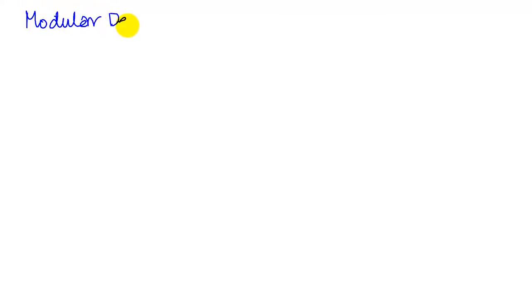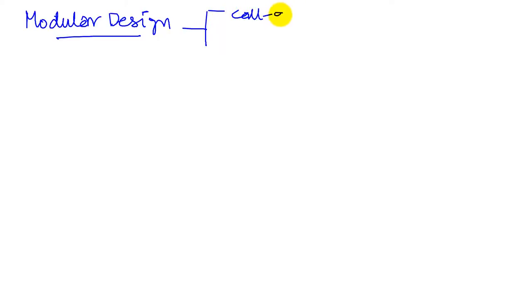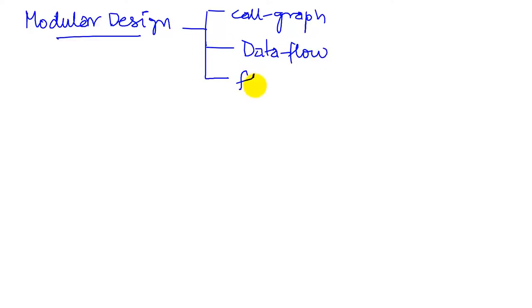In this module we're going to look at the game from a modular design standpoint. We will design our system using three important tools: the first one will be a call graph, the second will be a data flow graph, and the third will be low-level detail flowcharts.